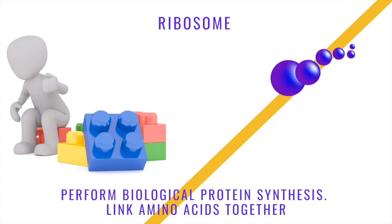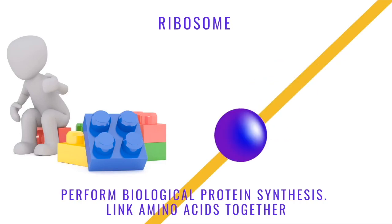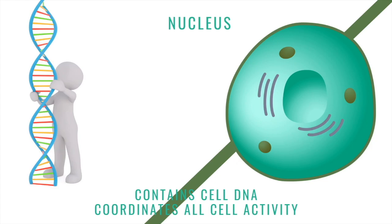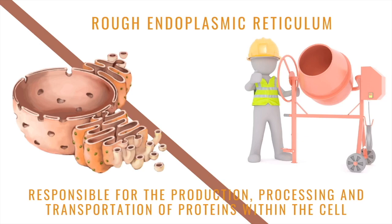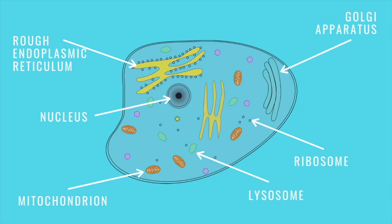Ribosomes are the building blocks — they allow protein synthesis to take place by linking amino acids together, and there are many ribosomes within your mitochondria. We also have the nucleus, which contains the cell's DNA and coordinates all cell activity, initiating the other organelles to do their jobs. Finally, the rough endoplasmic reticulum sits close to the nucleus and looks like a maze; it allows proteins to travel throughout the cell. Understanding each organelle's purpose will help you identify them on a diagram.